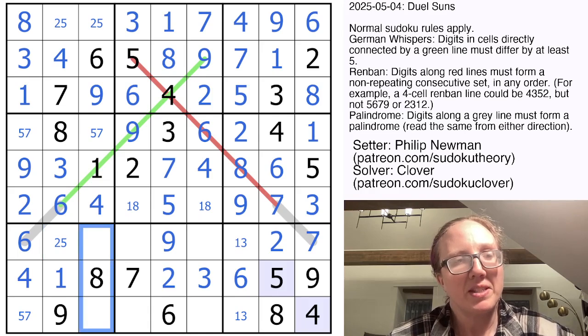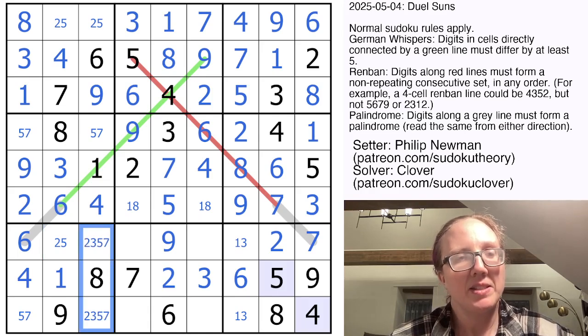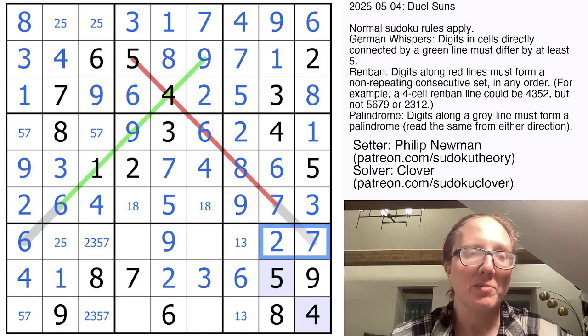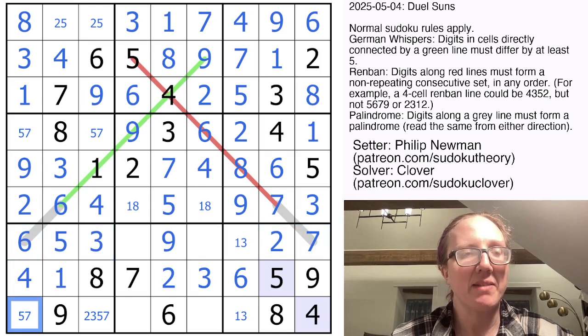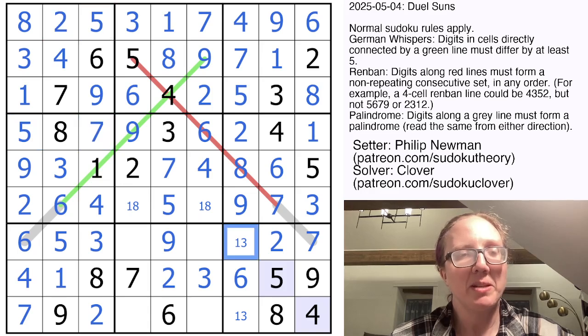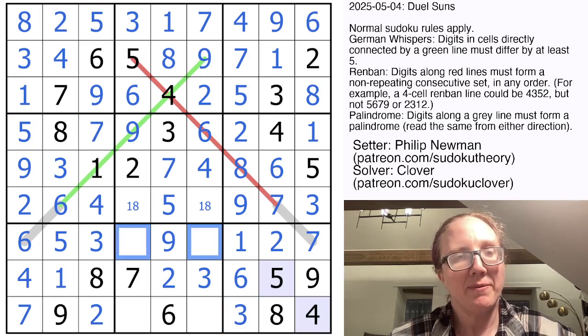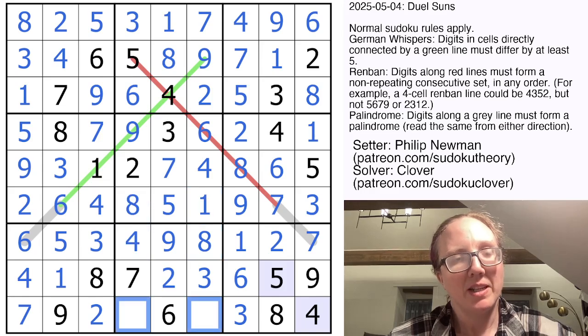We still need a three here and we still need a two, five, and seven. We already have a two and seven in this row. So that's going to be a five. That's going to be a three. That makes this the seven and makes this the two. The three resolves this one three pair from earlier. We need a four and an eight to finish off this row, which finishes off the one and eight here. And we still need a one there and a five to finish the puzzle.